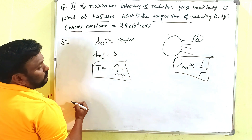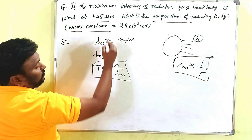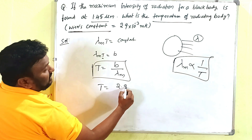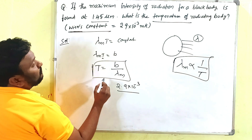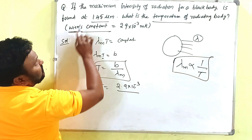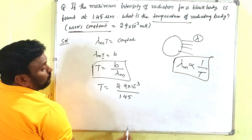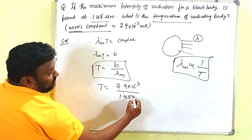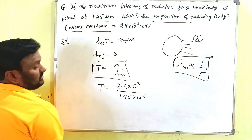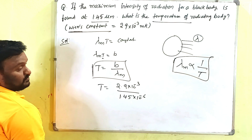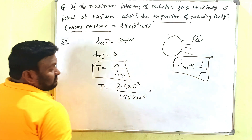T = 2.9 × 10⁻³ divided by λ_m, which is 1.45 × 10⁻⁶. So we substitute: T = 2.9 × 10⁻³ / (1.45 × 10⁻⁶).